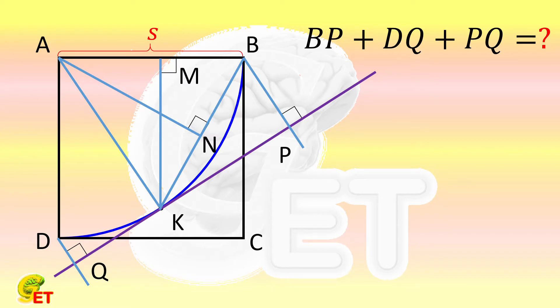According to the alternate segment theorem, the angle BKP is equal to half the angle BAK. The triangle ABK is an isosceles triangle, so AN bisects the angle BAK, which means that the angle BKP is equal to the angle NAK.